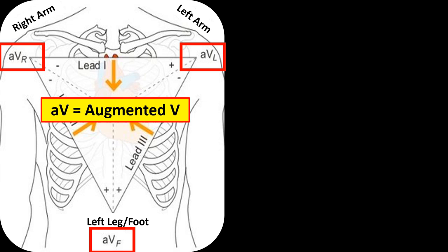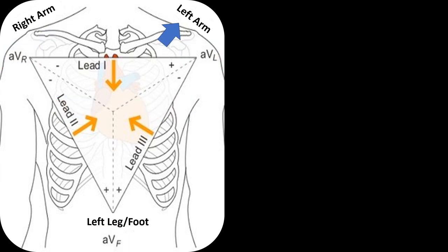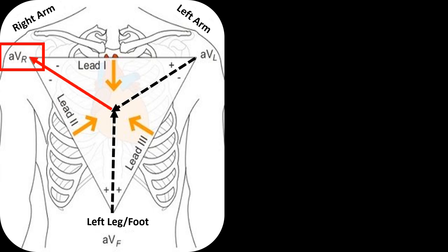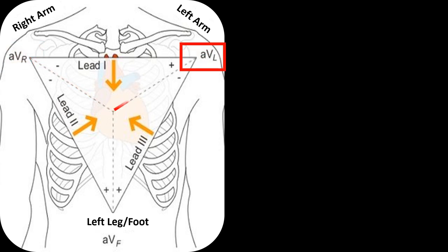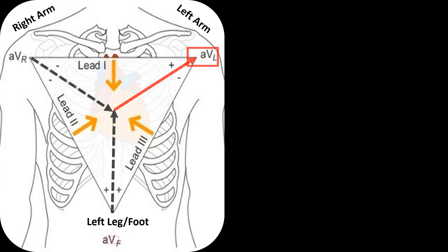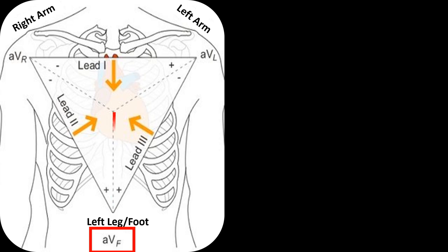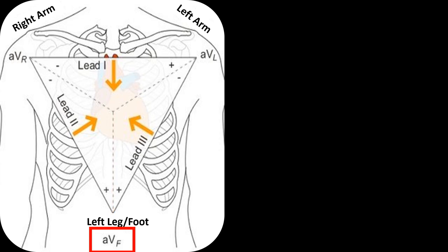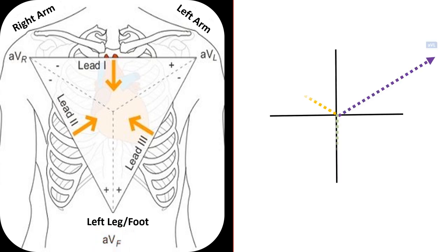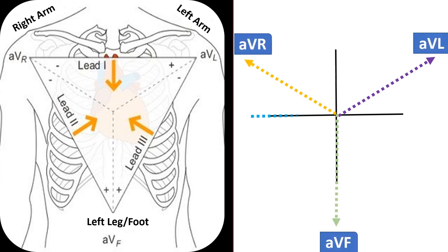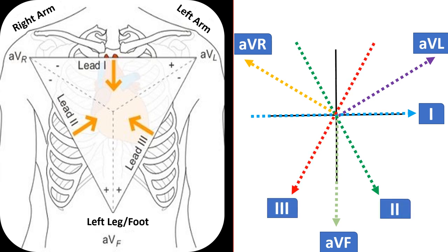The three unipolar limb leads are AVR, AVL, and AVF. AV stands for augmented V; R stands for right arm, L stands for left arm, and F stands for foot. In AVR, the positive electrode is on the right arm, and the negative reference point is the average of left arm and left leg electrodes. In AVL, the positive electrode is on the left arm, and the negative reference point is the average of right arm and left leg electrodes. In AVF, the positive electrode is on the left leg, and the negative reference point is the average of right arm and left arm electrodes. Although F stands for foot, please conceptualize the positive electrode of AVF as being at the umbilicus. Plotting the three augmented unipolar limb leads and combining the six limb leads, you will see these plots along the frontal plane.